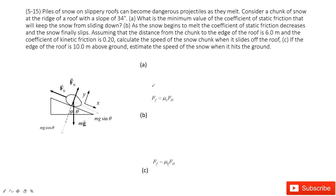First, we look at part one: when the snow just keeps stationary on the slope. We do a force analysis — we have gravity, normal force, and friction. Because the tendency for the snow is to move down, friction acts upward to keep it stationary. We project gravity into two components: the x-component (mg sin θ) and the y-component (mg cos θ).